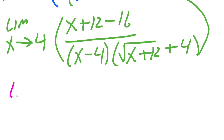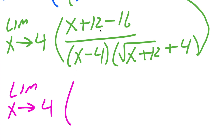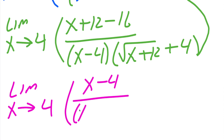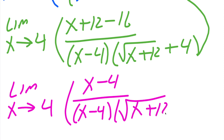Now let's just clean it up a little bit. We have the limit of x approaching 4. In the numerator, 12 minus 16 is negative 4, so we get x minus 4. The denominator contains x minus 4 times the square root of x plus 12, outside there's a plus 4, close parentheses.